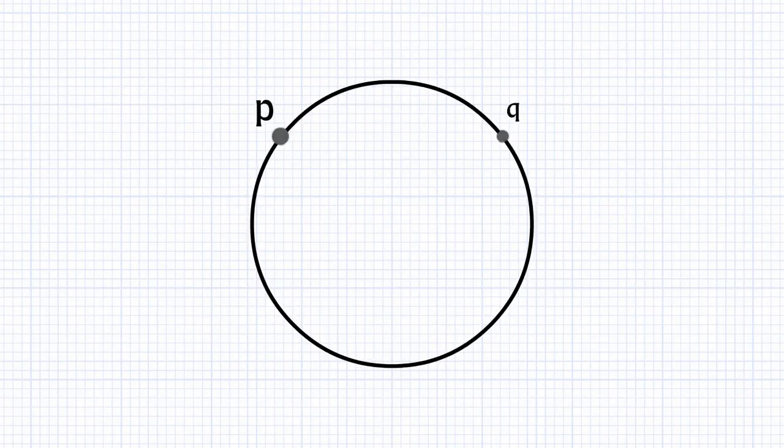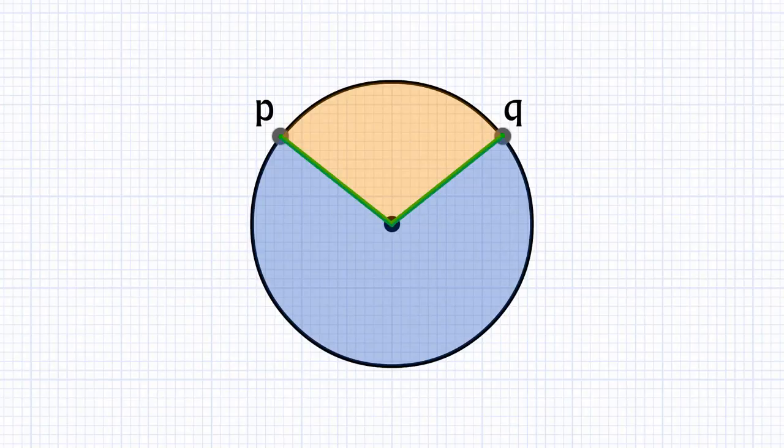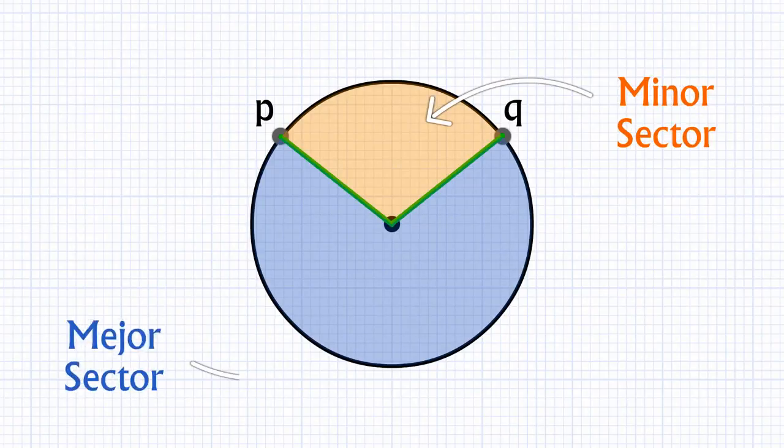Let's draw another circle. P and Q are the points on the circle. If you draw a line segment from the center connecting point P and Q like this, then it divides the circle into two regions. This one is a minor sector and this one is a major sector.